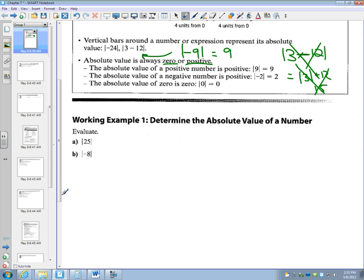So to evaluate, the absolute value of 25 is 25. The absolute value of negative 8 is simply 8 because it's 8 units away.